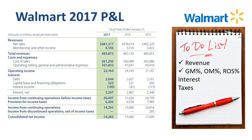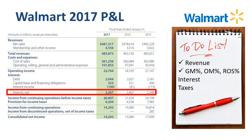That's the revenue analysis and the margin analysis done. Net income is almost $9 billion lower than operating income — let's review what is going on in the interest and tax lines. First off, interest — a charge in total of $2.3 billion, most of which is interest on debt.